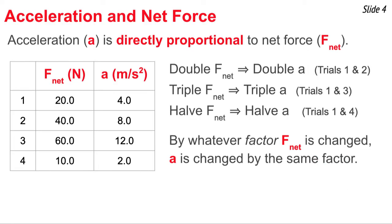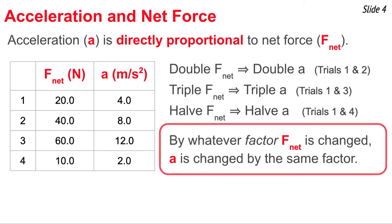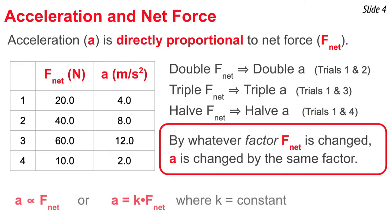Here's what is meant by saying that the acceleration is directly proportional to the net force. As you see in the data table, if we double the F_net, the acceleration gets doubled. If we triple the F_net, the acceleration gets tripled. And if we halve the F_net, the acceleration gets halved. By whatever factor the F_net is changed, the acceleration is changed by the same factor. We sometimes express this as a proportionality statement, saying that acceleration is proportional to F_net.